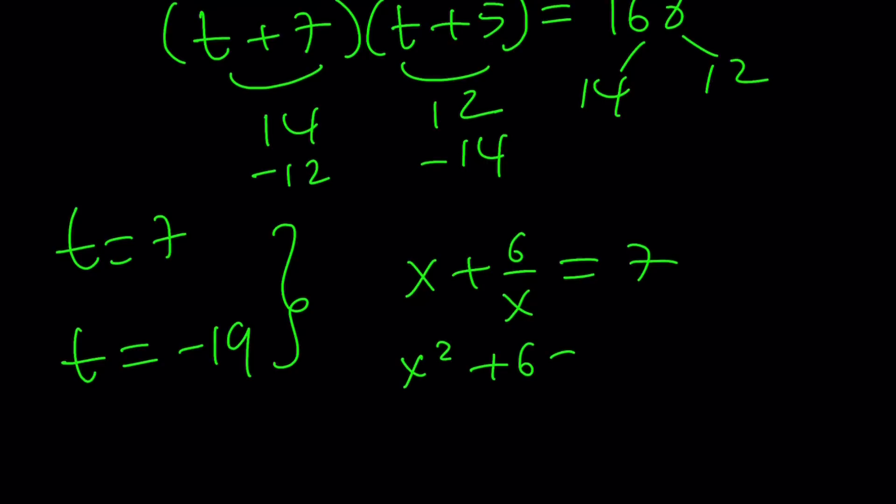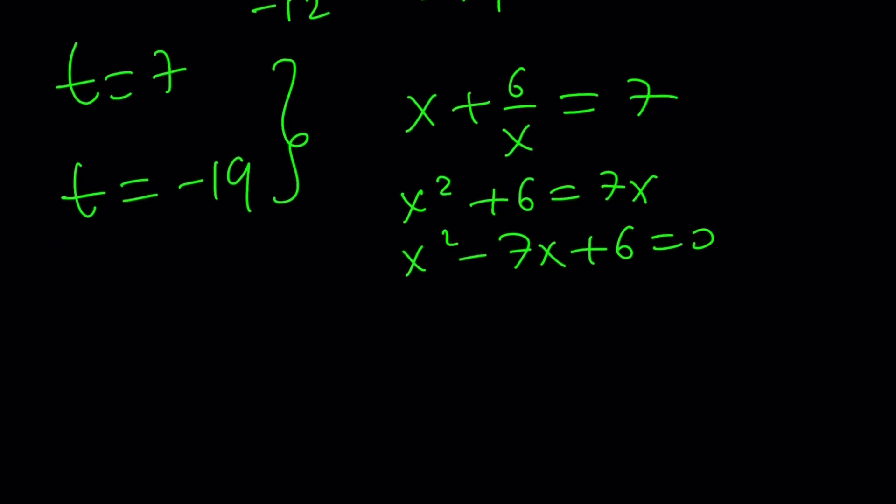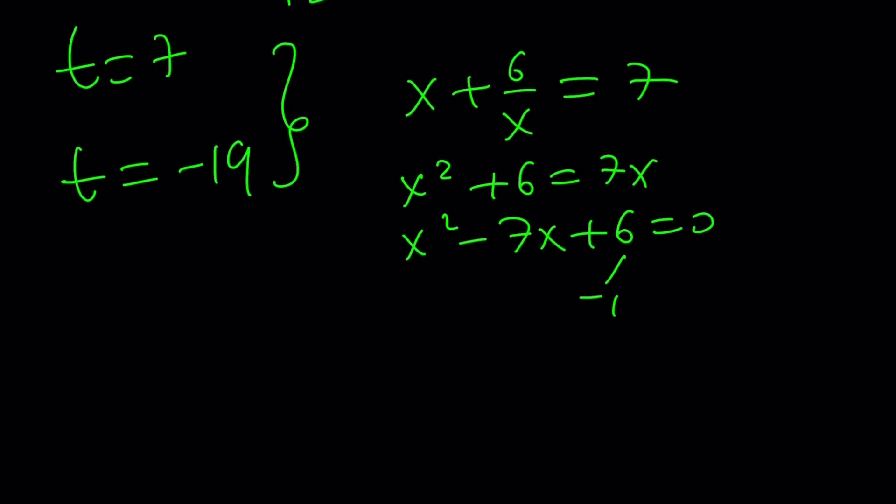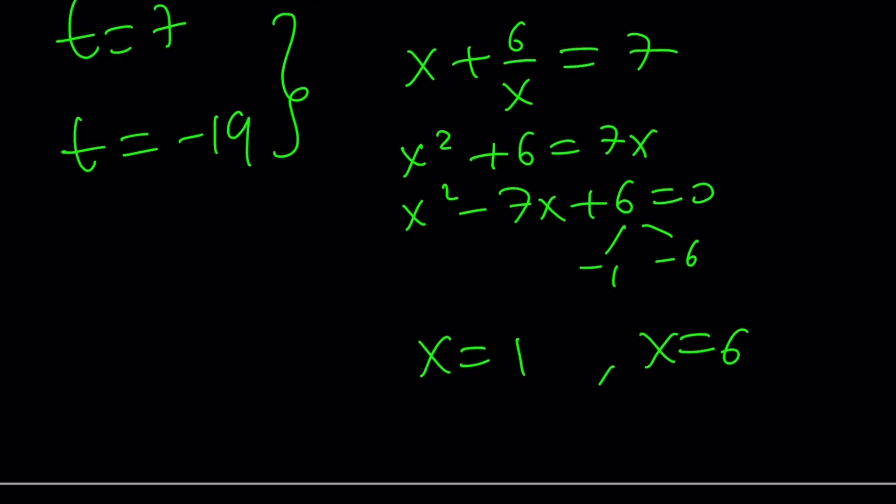x squared plus 6 equals 7x. x squared minus 7x plus 6 equals 0. Obviously, we're looking for two numbers, negative 1 and negative 6. So the other number is 6. Of course, because when x is 6, 6 over x is 1. So I should have known that. x equals 1, x equals 6.